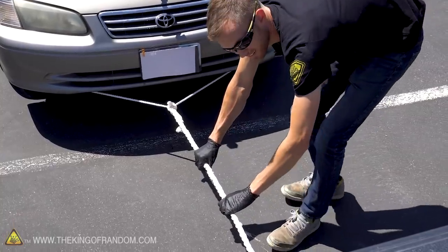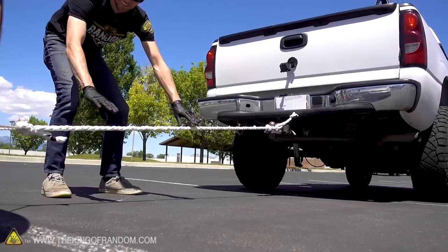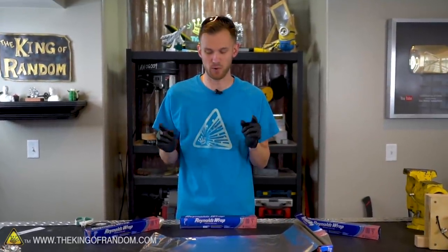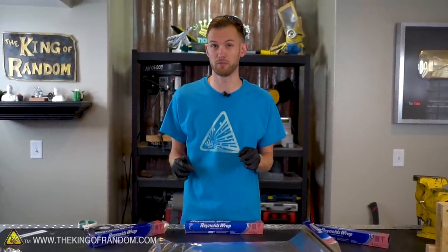Our rope made out of paper towel was able to hold my weight and pull a car. So we know that we can take something weaker and bind it together into something stronger. Today, we want to see if we can make that work with aluminum foil.